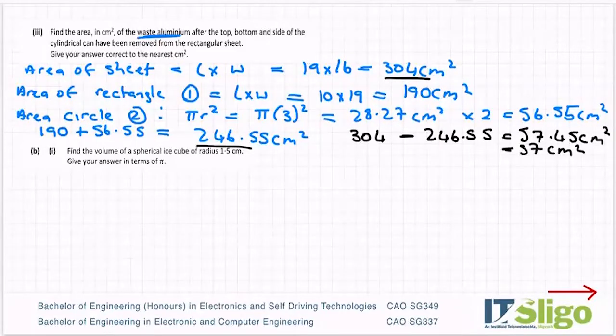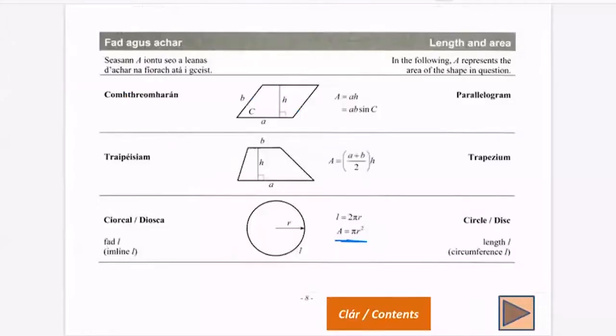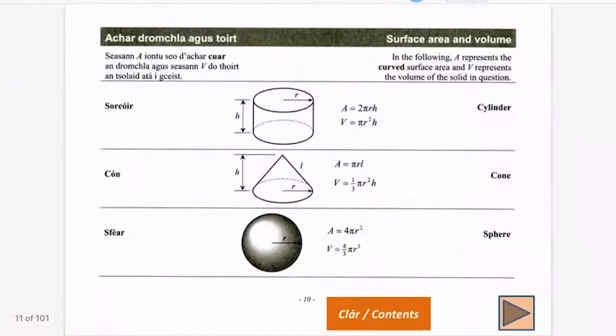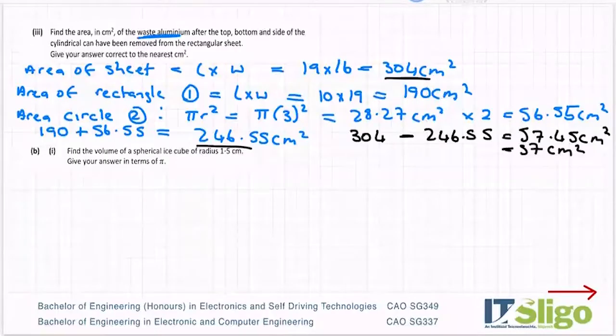So an area question. Find the volume of a spherical ice cube of radius 1.5 centimeters. Sorry, it took me a minute there to visualize a spherical ice cube of radius 1.5 centimeters. Give your answer in terms of pi. As long as you use your log tables for area and volume, it's not too bad. So length and area comes on the first two pages, and then you have surface area and volume. So spherical is your sphere.